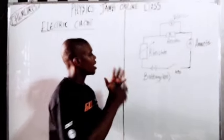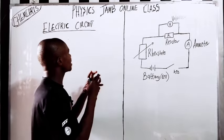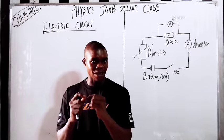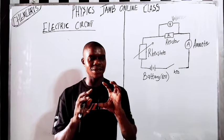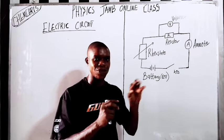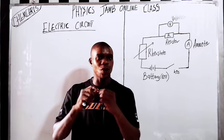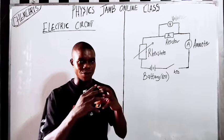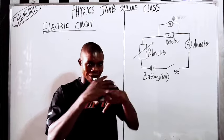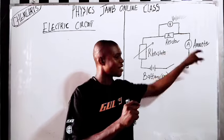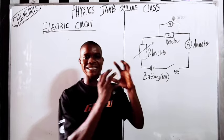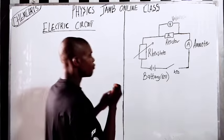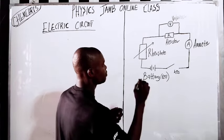The way the components are connected is very important. One thing to understand is that the voltmeter in the electric circuit is always connected in parallel — voltmeters are arranged in parallel connection. While the ammeter is always arranged in series — connected in series connection. This is very important to understand.